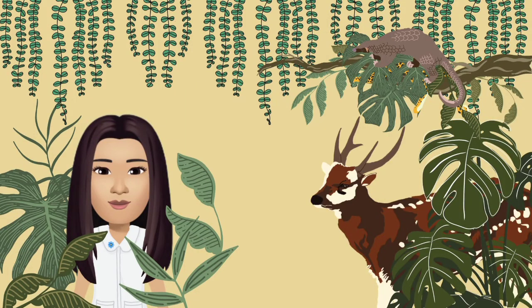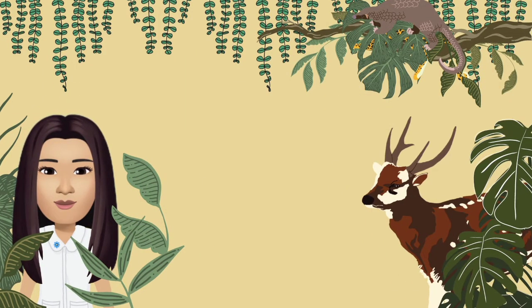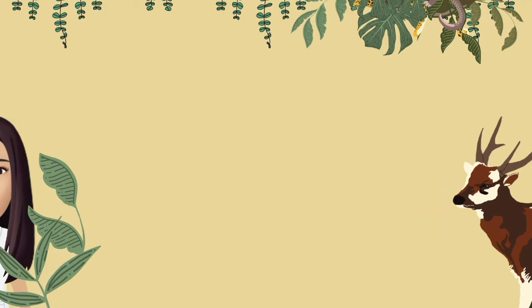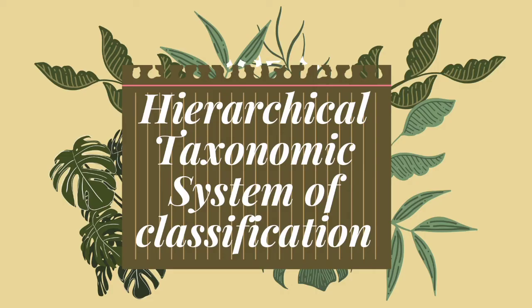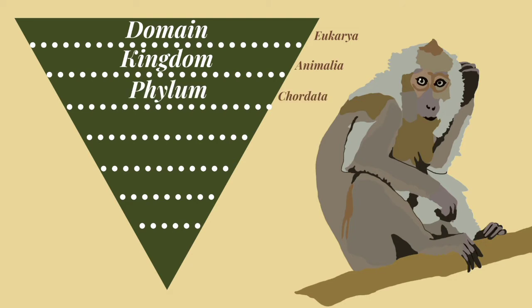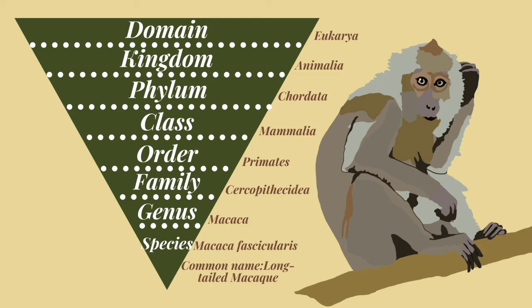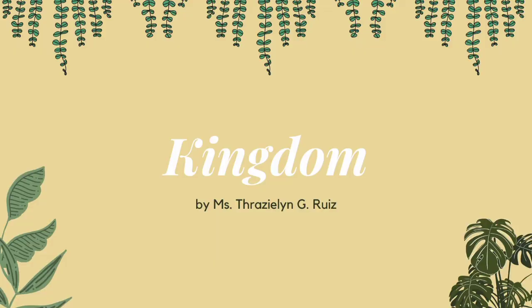Good day, class! After discussing the topic Hierarchical Taxonomic System of Classification, we know that it has eight levels: the domain, kingdom, phylum, class, order, family, genus, and species. Now, let's talk about one of the levels of the Hierarchical Taxonomic System — the kingdom.